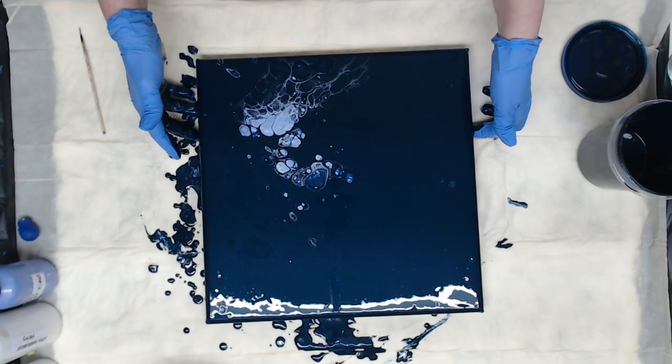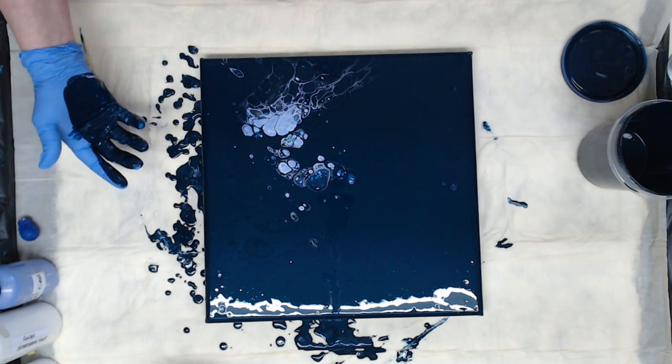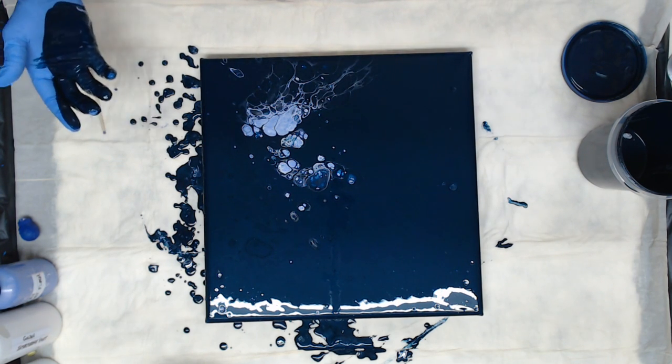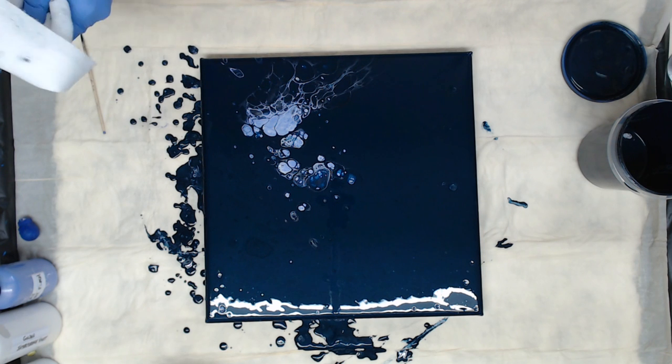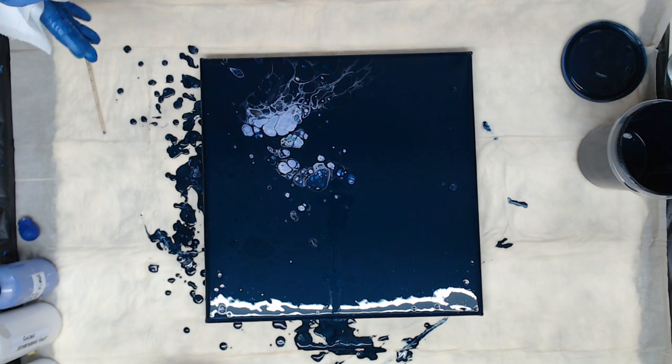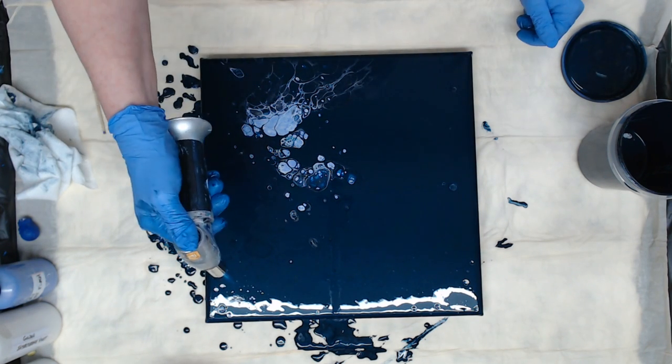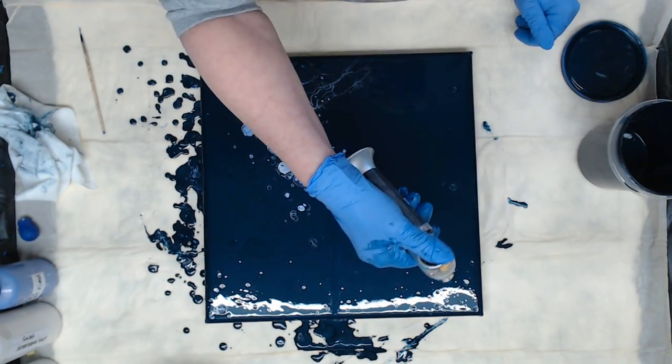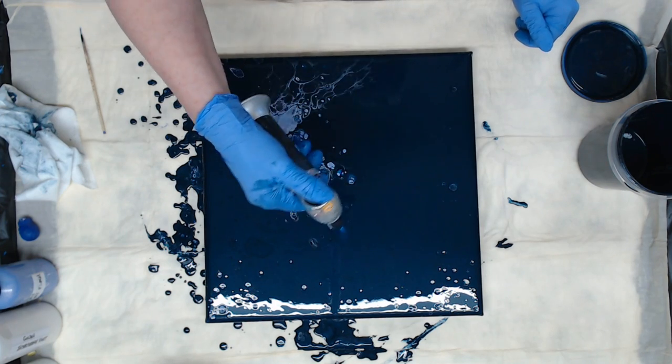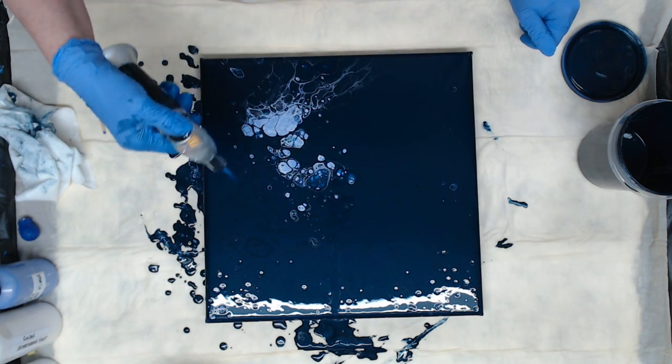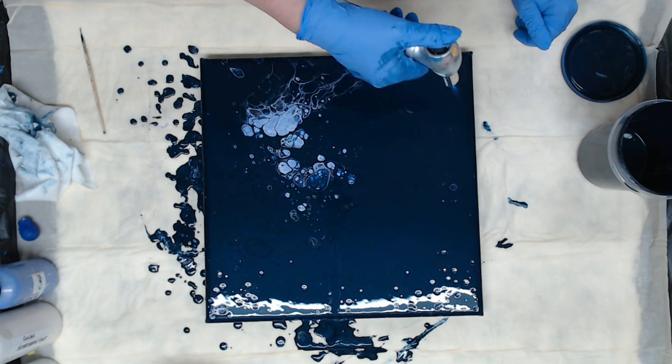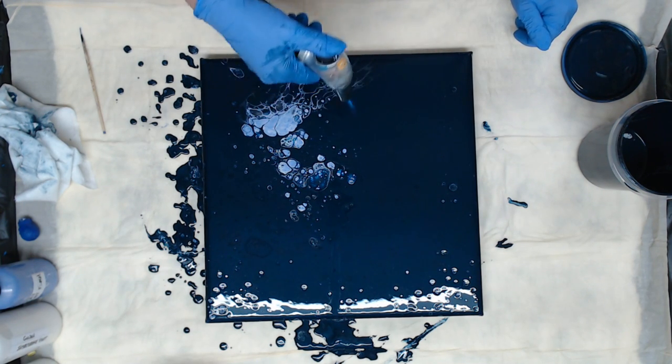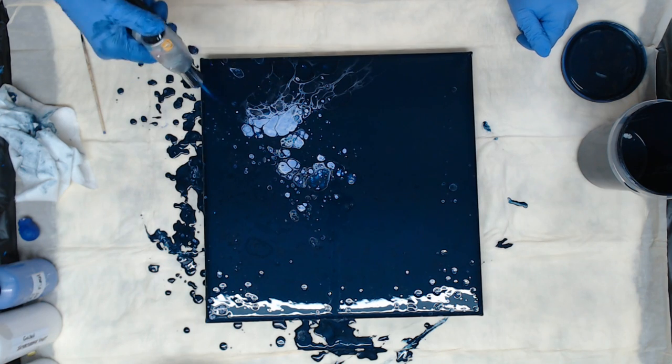Let's let that set for a few minutes. Actually I'll torch it first and then we'll let it set for five minutes and see what happens, because the silicone is going to want to come up so it will open up in spots. I love doing these little experiments just to play.